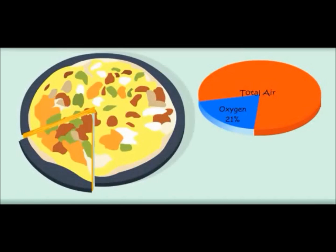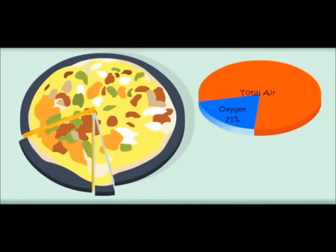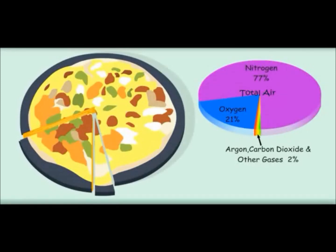Let me cut one more part. It is very small, very tiny. Which gas is this? These are many gases like argon, carbon dioxide. So much pizza is left — which air is it? It is nitrogen. 77% of air in the atmosphere is nitrogen.